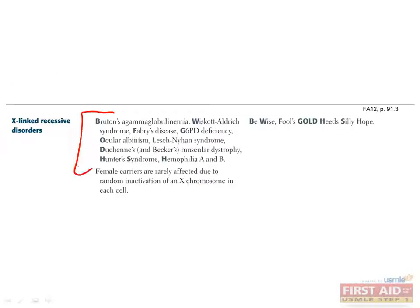This is a list of the most commonly tested X-linked recessive disorders. Remember, these diseases most commonly affect males, who always inherit it from their mother. To remember this list, you can use the mnemonic 'Be Wise, Fool's Gold, Heeds Silly Hope,' which stands for Bruton's agammaglobulinemia, Wiskott-Aldrich syndrome, Fabry's disease, G6PD deficiency, ocular albinism, Lesch-Nyhan syndrome, Duchenne's and Becker's muscular dystrophy, Hunter's syndrome, and hemophilia type A and B. These diseases will be covered in more depth elsewhere, but this mnemonic can help you remember which diseases are X-linked recessive.